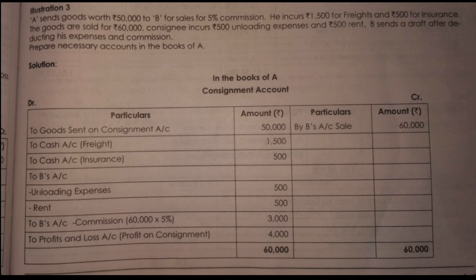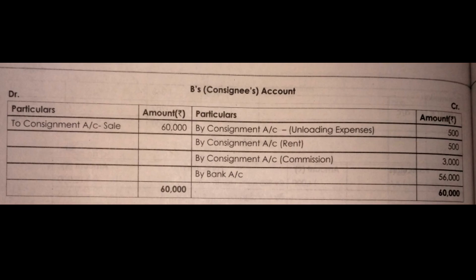You can get the consignors to make their expenses, and we can get the transaction. Now, if you want to make a profit and loss account, you will get a profit and loss account of consignment. Now we have a consignment account. B is the consignee account. A is the consignor account. If you convert B's account, you will open two sales accounts.